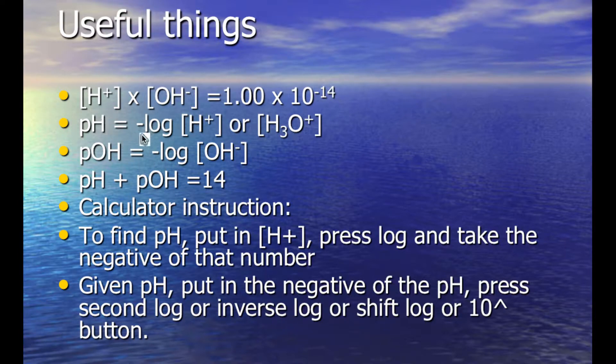The pH is the negative log of the hydrogen ion concentration. pOH is the negative log of the hydroxide ion concentration. And lastly, the pH and the pOH always add together to be 14.